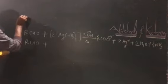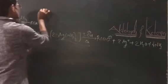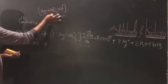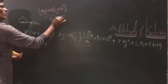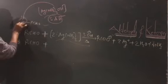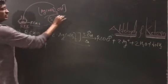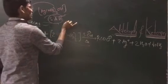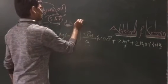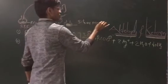This round bottom flask contains aldehyde. We add AgNO₃ — the freshly prepared silver ammonium hydroxide — into the round bottom flask which contains the aldehyde. After addition of this freshly prepared silver ammonium hydroxide, the mixture undergoes a color change.